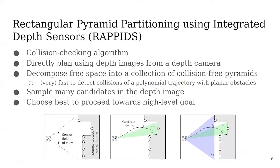In this slide, I will explain the collision checking algorithm. This is based on our previous research, so-called RAPID, Rectangular Pyramid Partitioning using Integrated Depth Sensors. It first decomposes free space into a collection of collision-free pyramids. This allows fast collision checking between a polynomial trajectory and the planar surface of each pyramid. For more details, please check our previous research paper.